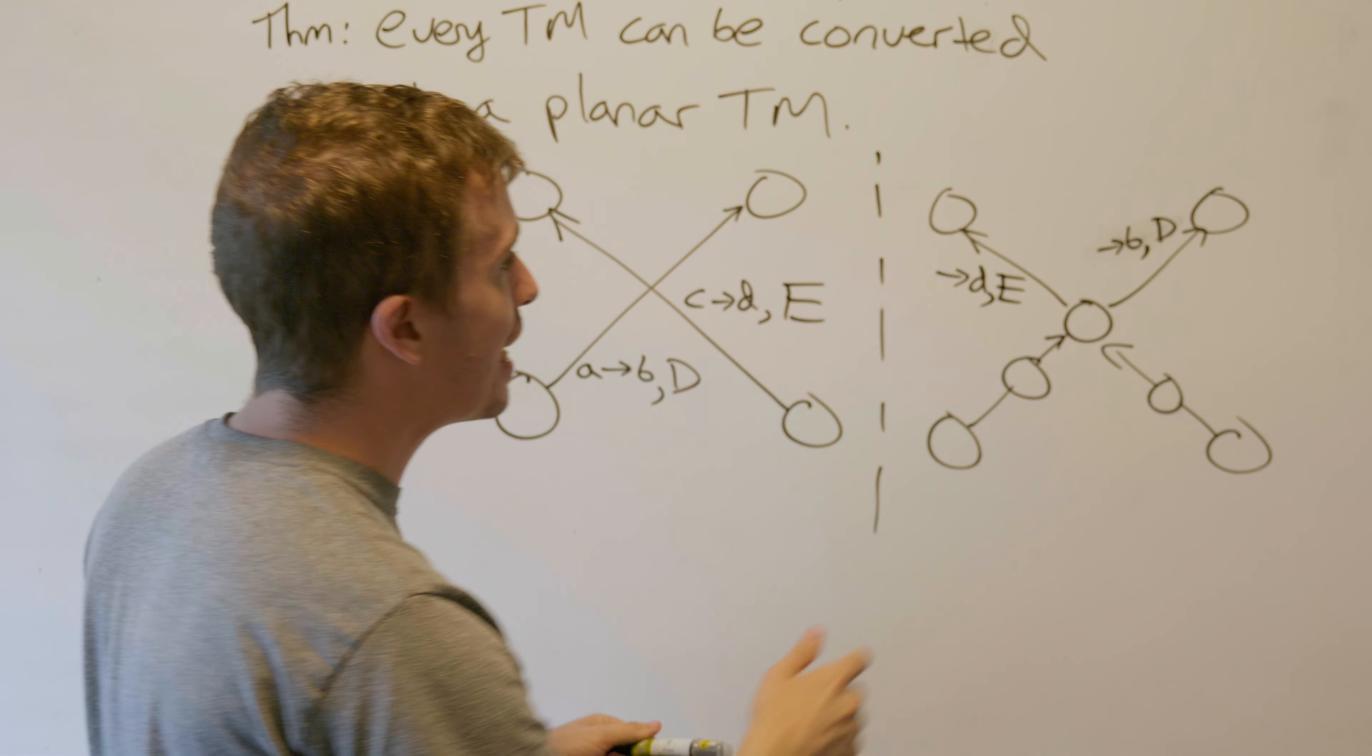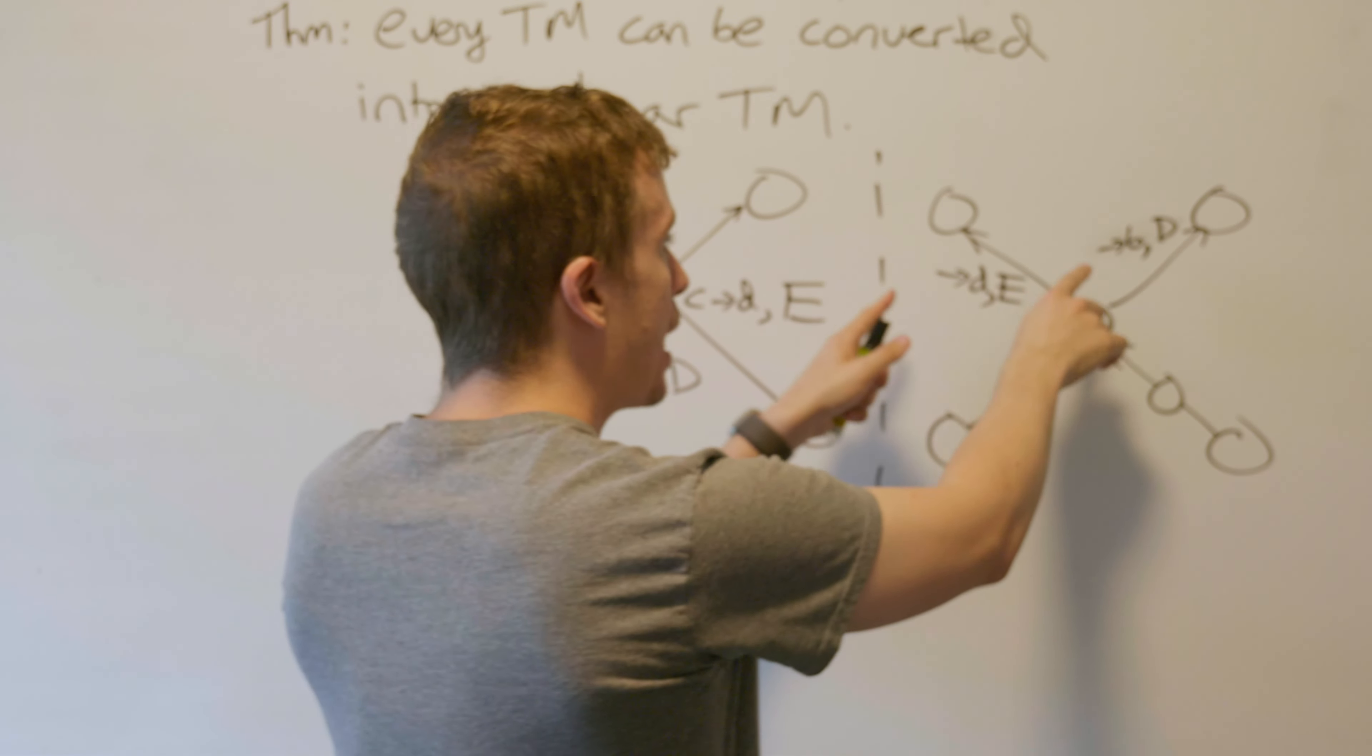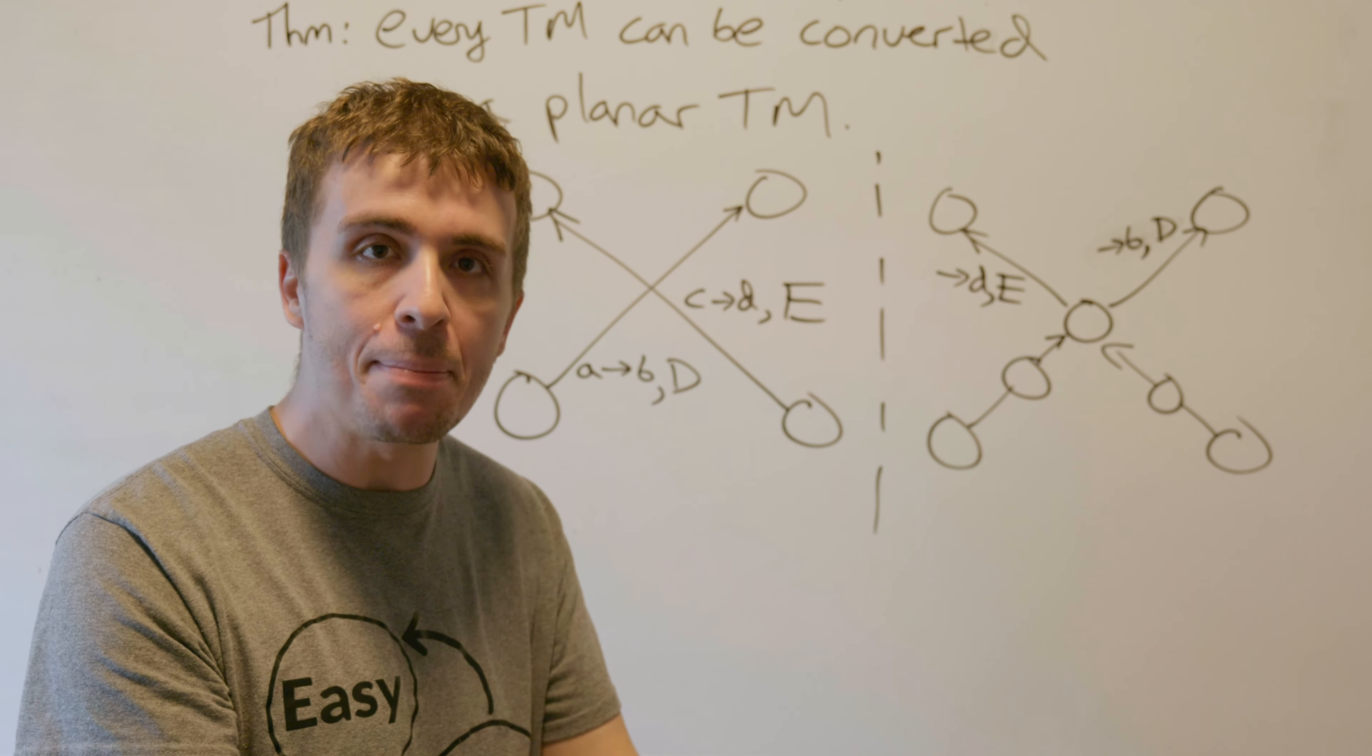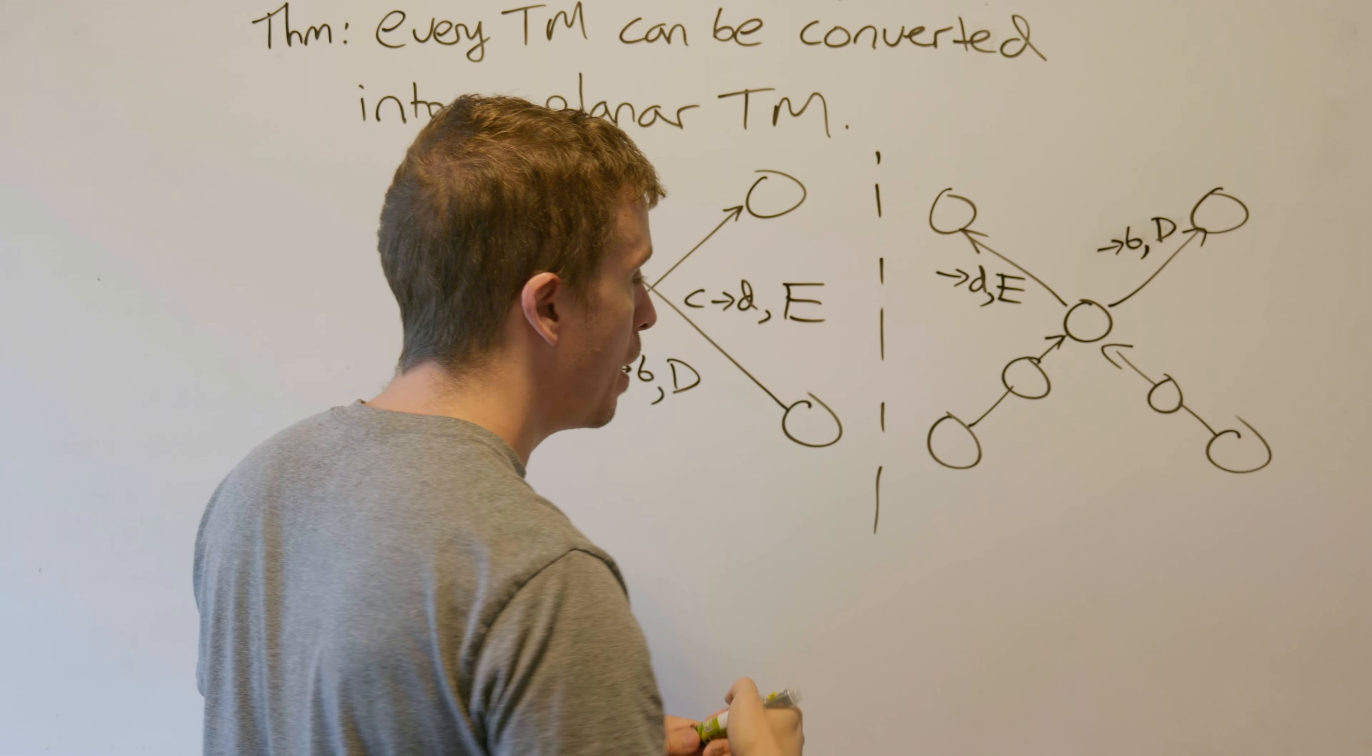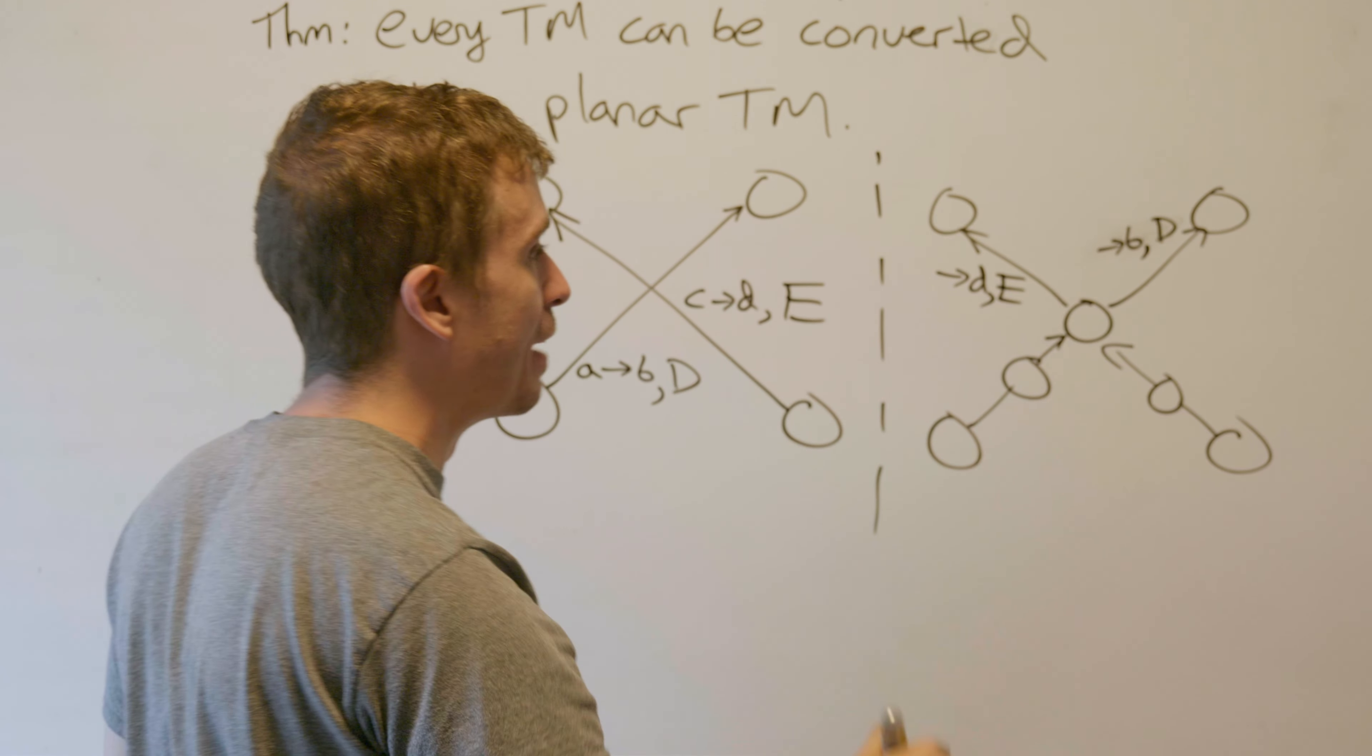The problem is when we get to this state, then we could be looking at anything. If we're not careful, we could go the wrong way. The key is that we introduce two new tape symbols, one corresponding to this way, one corresponding to that way. I'm going to call them a dollar sign for going this way and the euro for going the up and left direction.